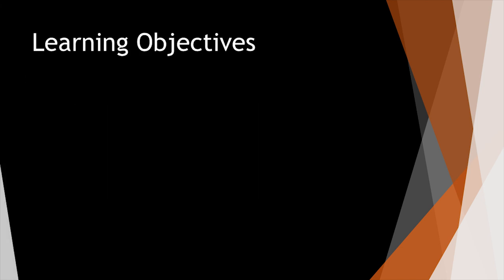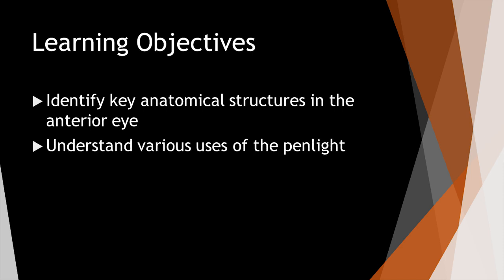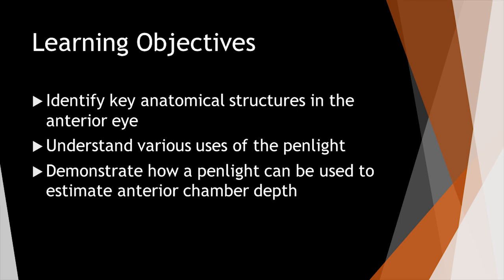Our learning objectives for this session will be: first, to identify key anatomical structures in the anterior eye; second, to understand various uses of the pen light; and lastly, to demonstrate how a pen light can be used to estimate the depth of the anterior chamber.